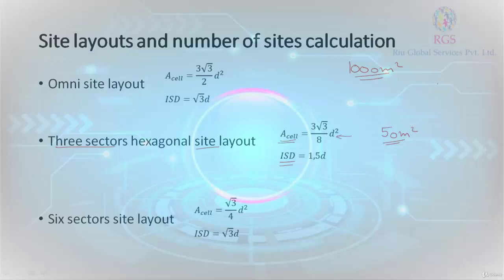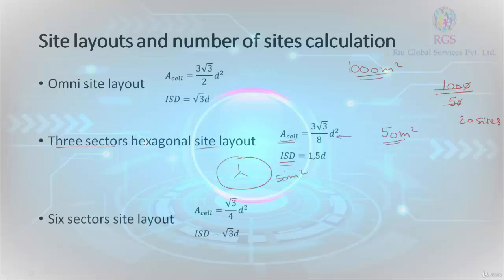So how many three-sector sites are required? The overall area to be covered is 1000 square meters, and one three-sector site can cover an area of 50 square meters — so 1000 divided by 50 gives us 20 sites required in order to cover the area. This is the main objective of a link budget: it gives you a rough figure of the number of sites required to cover the area.